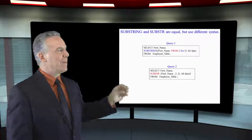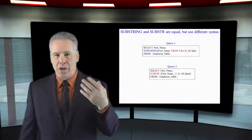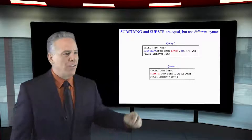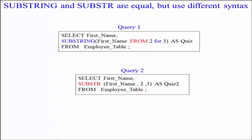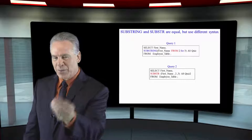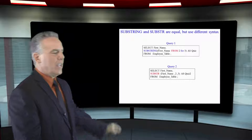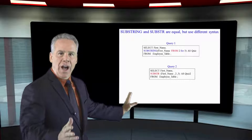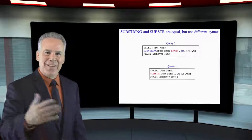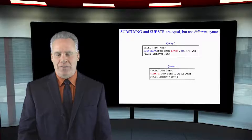I prefer the substring command, but there's also substr — a little bit shorter but does the exact same thing. Substring syntax: substring first name from two, four, three — start in position two and go for three. Substr is just a little different: substr first name, comma two, comma three. Those are equivalent commands.